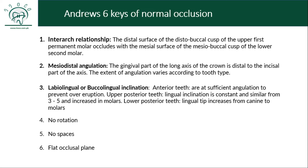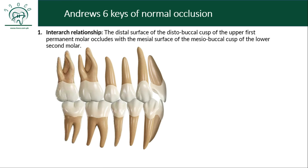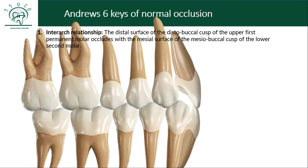We will discuss each key one by one. The first key is about inter-arch relationship. According to Lawrence Andrews, the distal surface of the distobuccal cusp of the upper first molar should occlude with the mesial surface of the mesobuccal cusp of the lower second molar. This is the distal surface of the distobuccal cusp of the upper first permanent molar, and this is the mesial surface of the mesobuccal cusp of the lower second permanent molar. Both these surfaces should be in contact in an ideal or normal occlusion.